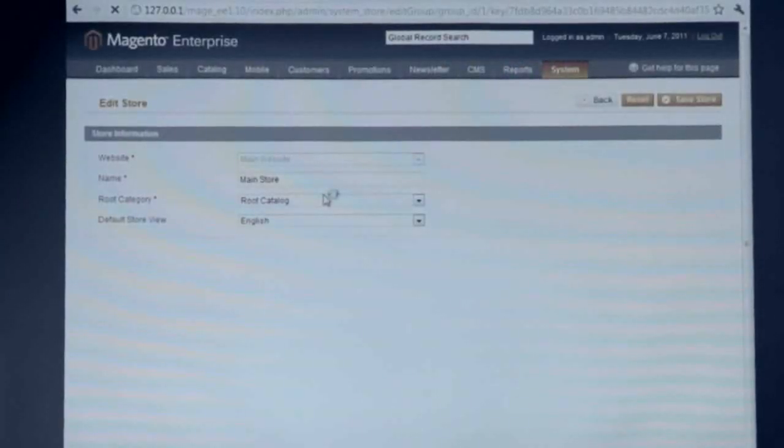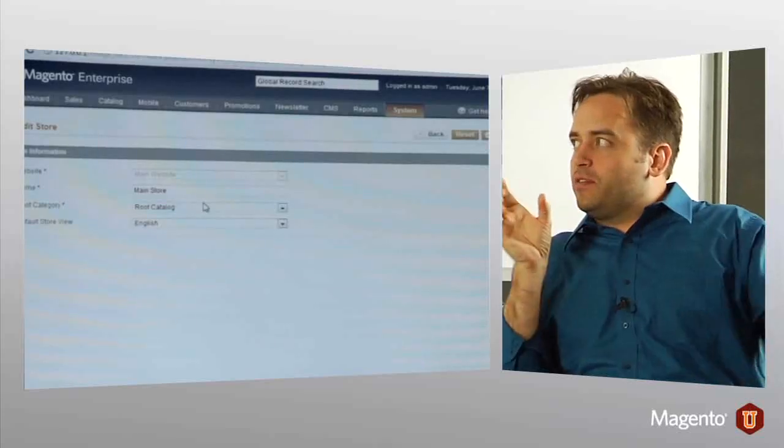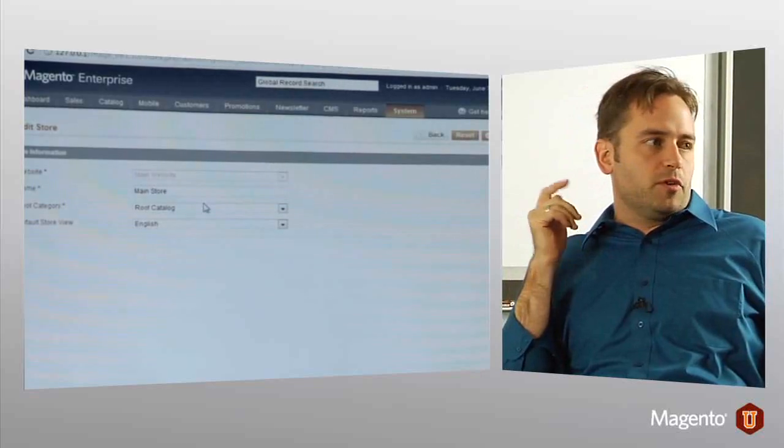Configuration, though, is either in the scope of a store or of a website. Store group is where you could connect a root catalog, or a root category, and set up the default store view. So, this is where the store group kind of ties together the website and a particular store view as a default. Basically, when I think of store groups, I just think, this is my root category.